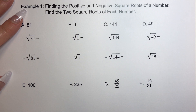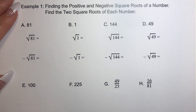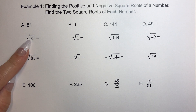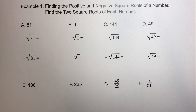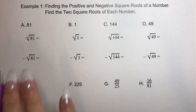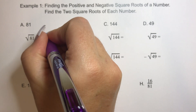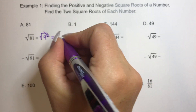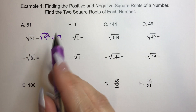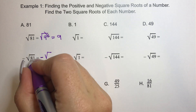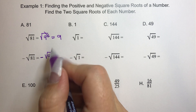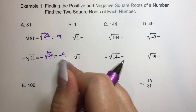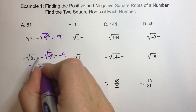Example 1: finding the positive and negative square roots of a number. Find the two square roots of each number. So 81 — this is the positive root of 81 and this means the negative. 81 is one of those perfect square numbers because we know that 81 is the same thing as 9 squared. So the square root of 9 squared — the square root and the square cancel each other out because they're inverse operations and we're left with positive 9. For the negative root: 81 is the same thing as 9 squared, the square root and the square cancel each other out, and we're left with negative 9. So the two answers are positive and negative 9.